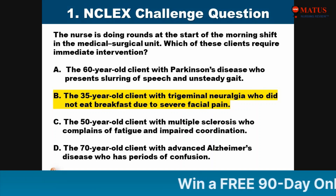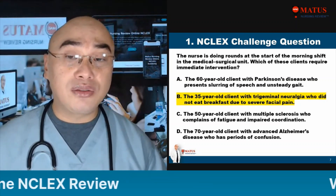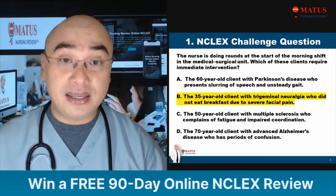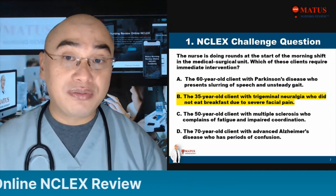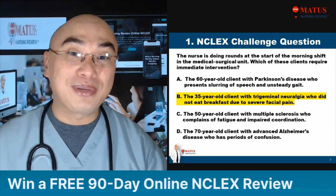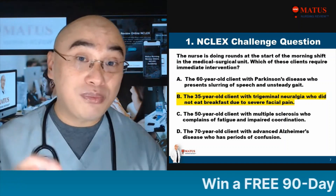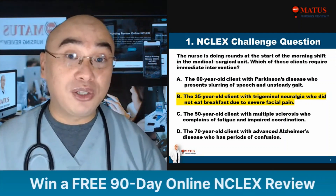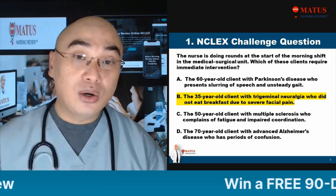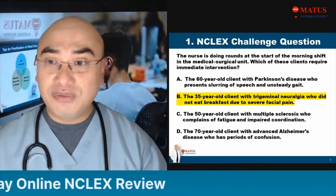However, with letter D, if it said the Alzheimer's patient suddenly had confusion, agitation, and screaming, that would be a change in condition — a concern. But letter B is a patient who did not eat breakfast due to severe facial pain. You have to address the pain of that patient so that the patient can eat. The answer is letter B — pain and nutrition. Not all prioritization questions will focus on airway, breathing, and circulation. At this time, the focus is nutrition. Always use the process of elimination to narrow down your choices.